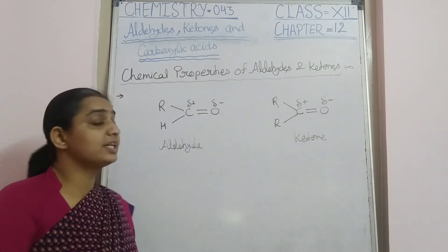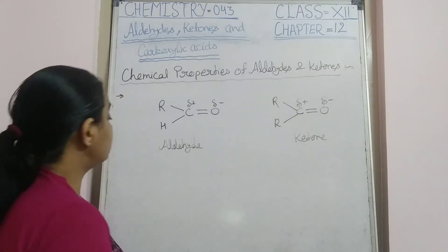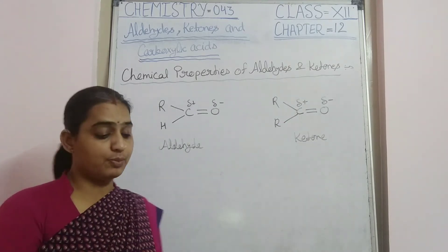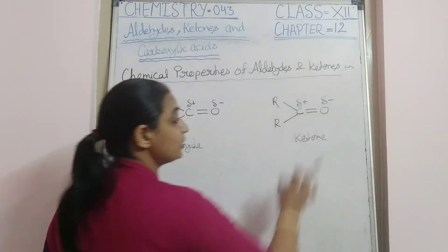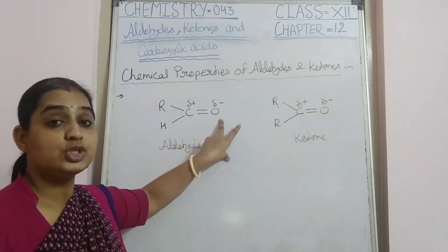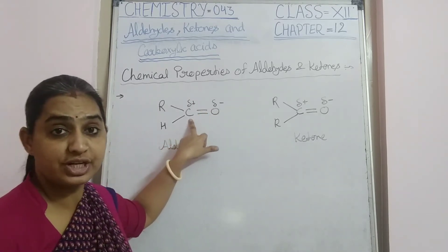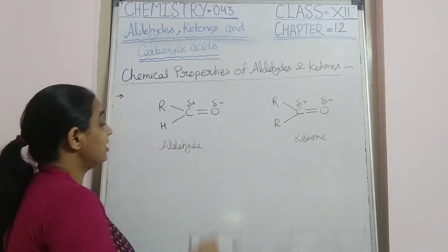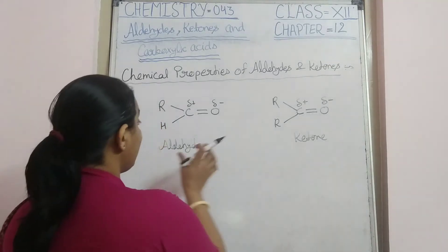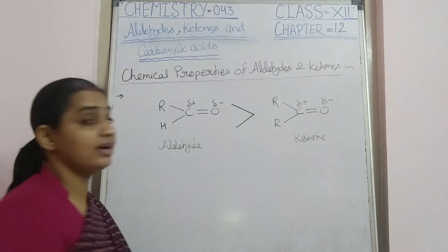Both aldehydes and ketones are highly reactive due to the polarized carbonyl group. The carbonyl group is polarized because oxygen has greater electronegativity than carbon, making oxygen partial negative and carbon partial positive. Now, both are highly reactive, but aldehydes are more reactive than ketones.